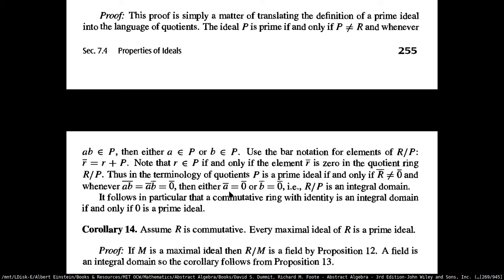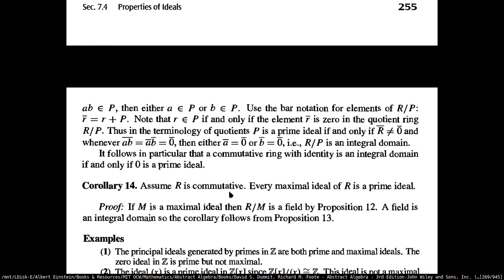From here you can just say that a commutative ring is going to be an integral domain if and only if zero is a prime ideal. The other corollary is that if you have a commutative ring, then every maximal ideal of the ring is a prime ideal. If you have a maximal ideal, then the quotient ring is going to be a field, and a field is trivially an integral domain — it satisfies all the conditions.